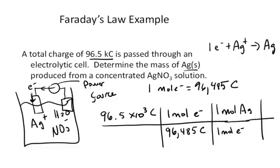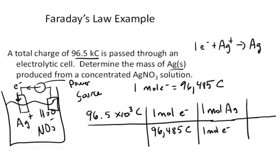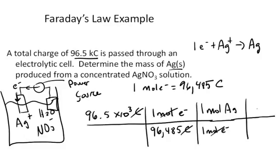And the question was how many grams. So I can convert now to grams using the molar mass of silver, which is about 108 grams of silver per 1 mole of silver.